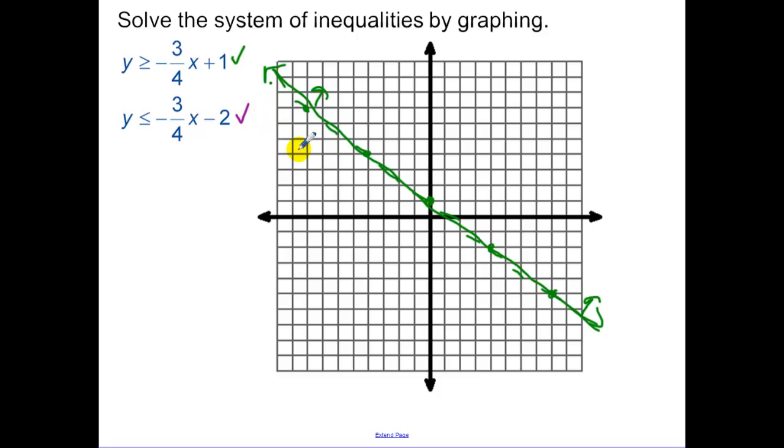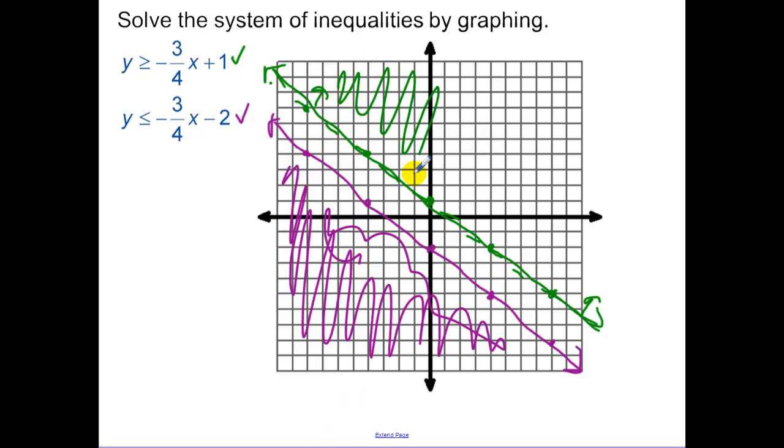Now the bottom equation. Minus two is my y-intercept. I'm just plotting out some points. And again, a solid line. For the purple one we're shading below. But for the green we shaded above. Did we have any shadings that overlapped? There is no solution to this equation because our shadings didn't overlap at all.